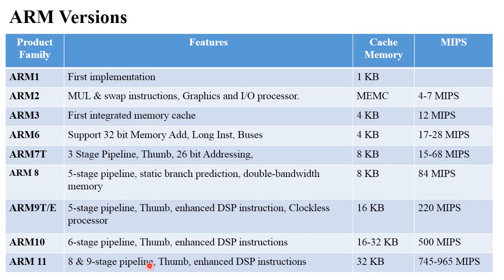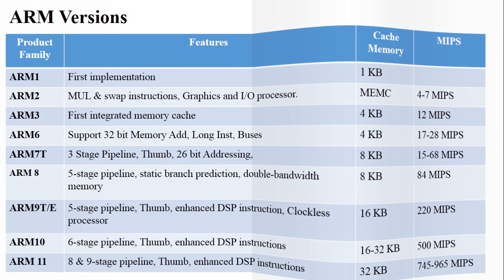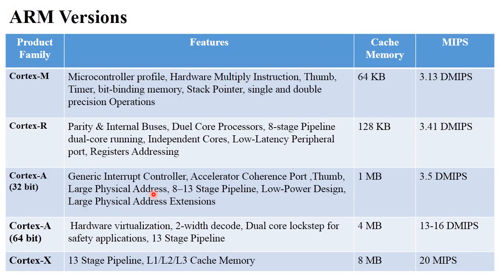ARM 11 has an 8 to 9 stage pipeline, enhanced DSP instructions, and supports 32 KB cache with 745 to 965 million instructions per second. Focus on these two columns — cache memory and million instructions per second. Each ARM processor was developed step by step and also enhanced their memory capacity. In this table you can see some latest ARM processors like Cortex-M, Cortex-R, and Cortex-A with 32-bit. They provide memory ranging from 64 KB, 128 KB, up to 1 MB, and the Cortex-A provides 3.5 million instructions per second.